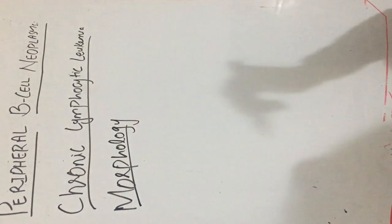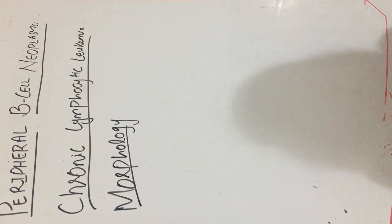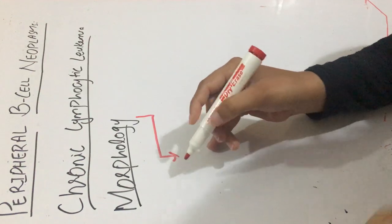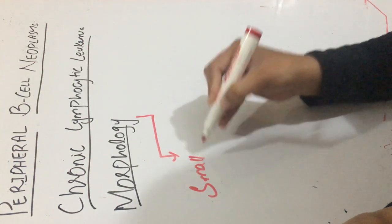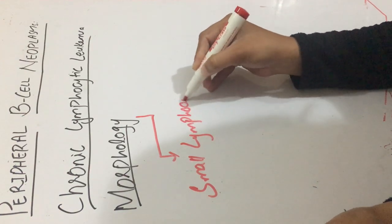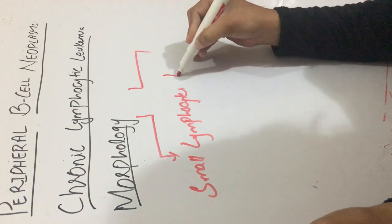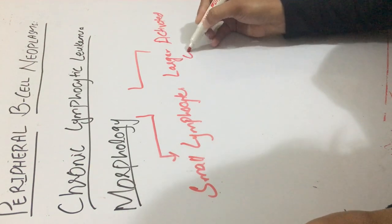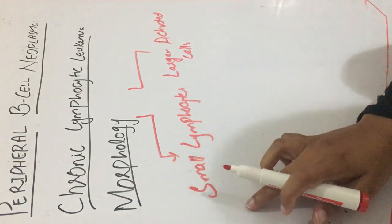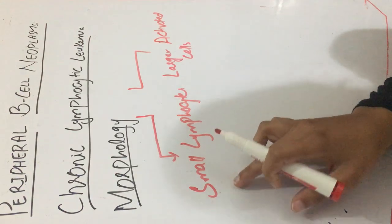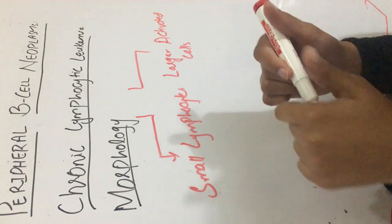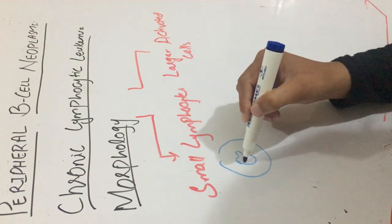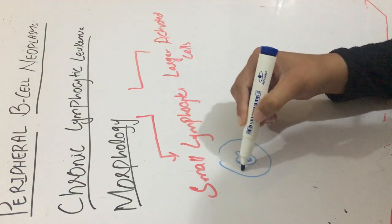There are two varieties of cells present in chronic lymphocytic leukemia. The first is small lymphocytes — these are small in size and are the predominant type. The small lymphocytes have a round or slightly irregular nucleus, condensed chromatin is present, and the cytoplasm is scanty in amount.